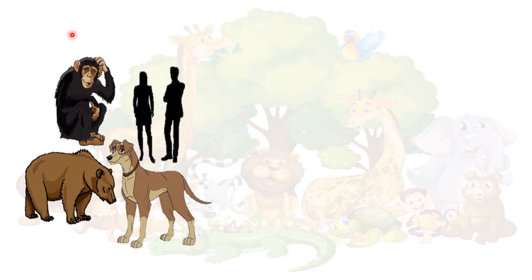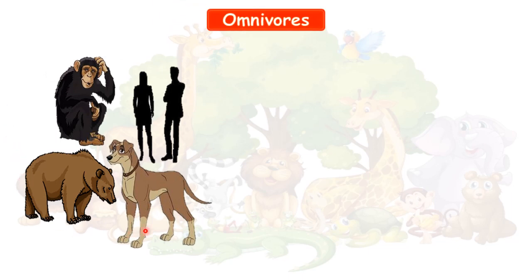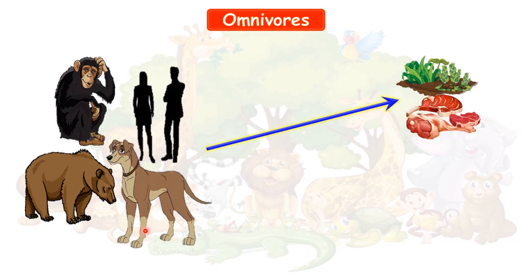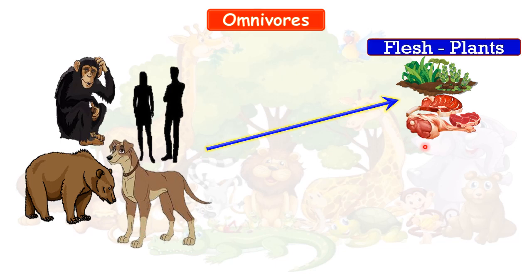Now children, see this is another group of animals on the screen. Here you can see bear, chimpanzee, dog and human. This is the group of animals that eat flesh and plants both, and animals that eat flesh and plants both are known as omnivorous animals.